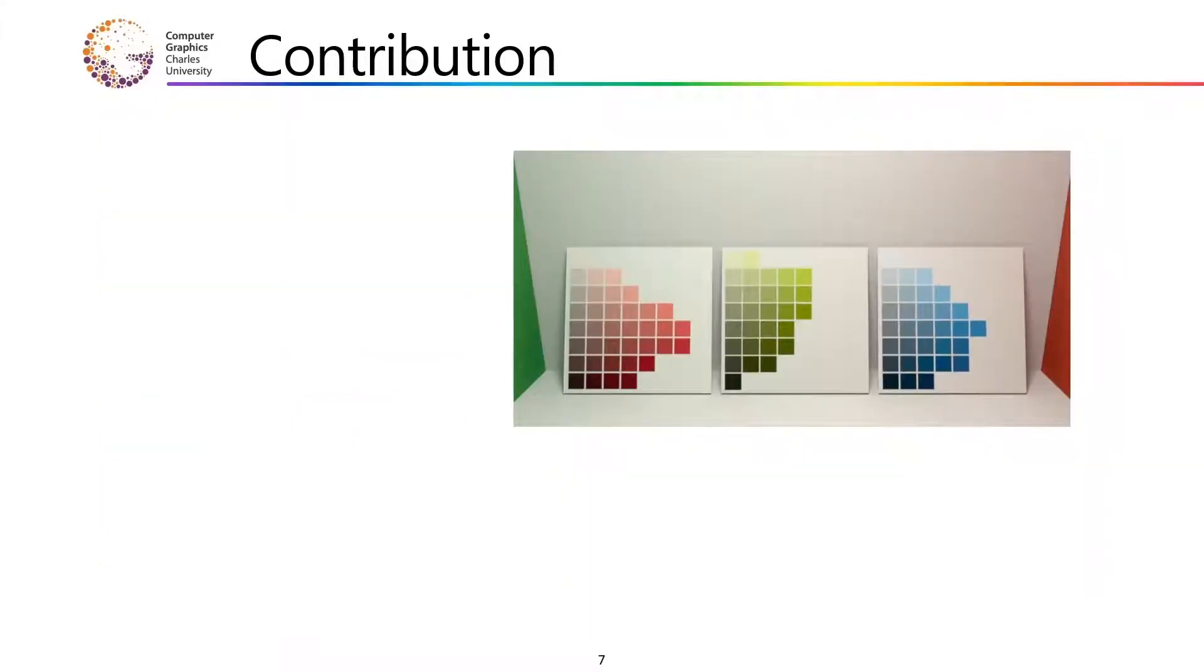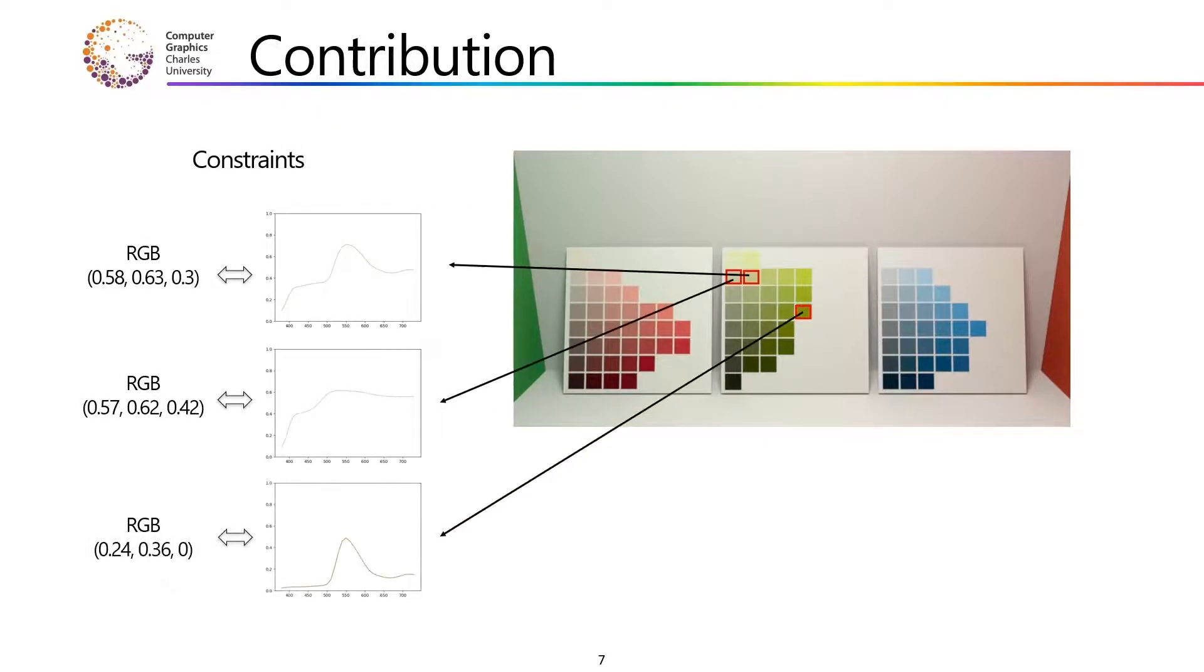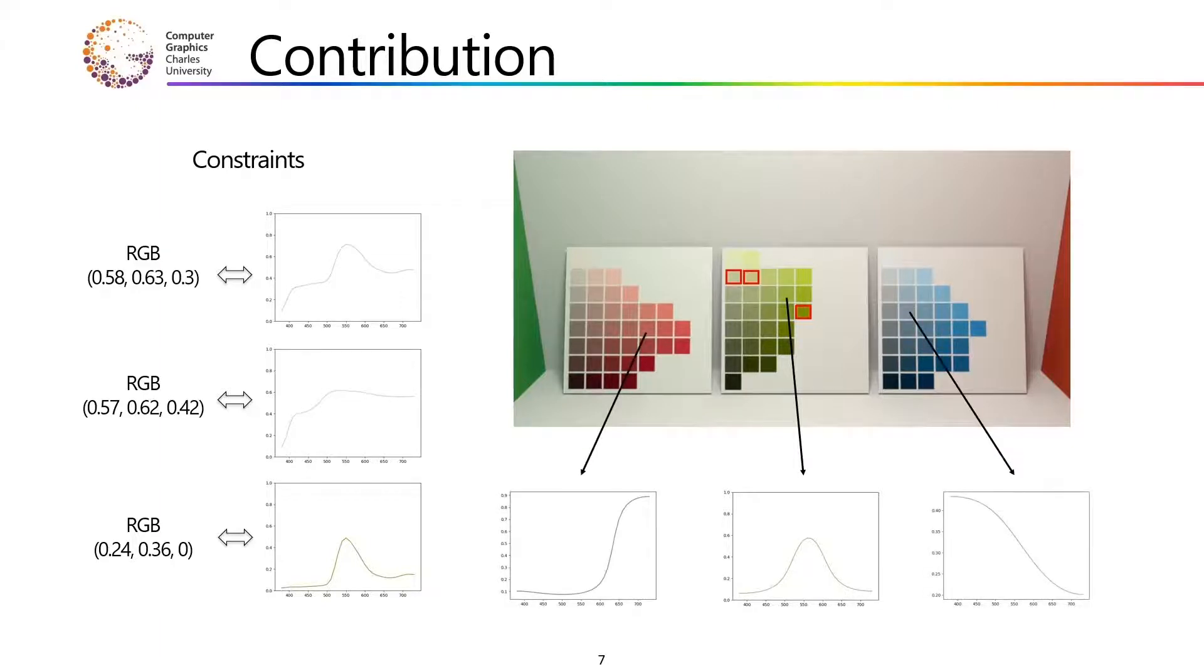Our approach offers the possibility to constrain the uplifting process with an input set of RGB to spectral mappings. During the uplifting, these mappings are preserved, which means that for the input RGB values, the corresponding spectra are always returned. Additionally, in order to allow minor texture changes, RGB colors that are in close vicinity to the constraints uplift to spectral shapes that are similar to those of the input spectra. All the other non-mapped RGB values uplift to plausible, smooth spectra as can be usually found in nature. This extension of standard uplifting systems enables the user to predict object appearance under varying illuminants, which in turn eliminates the repeated fine-tuning work.